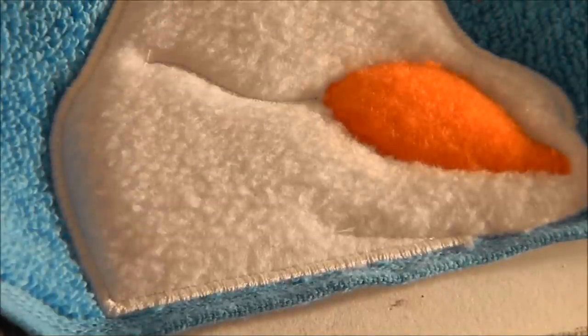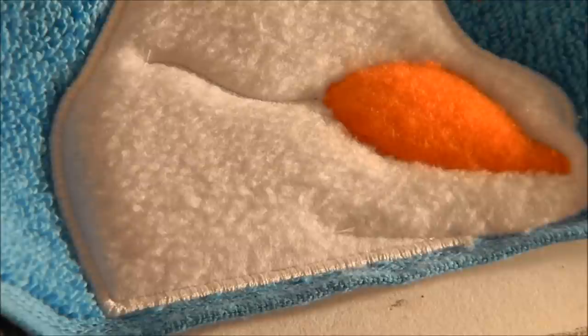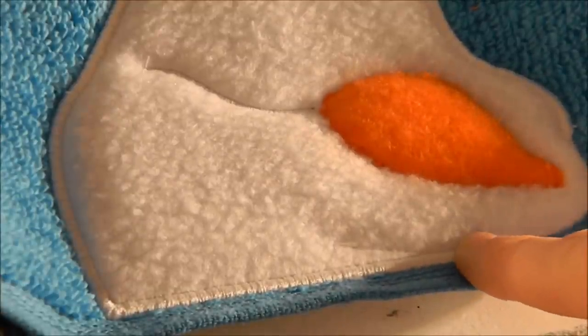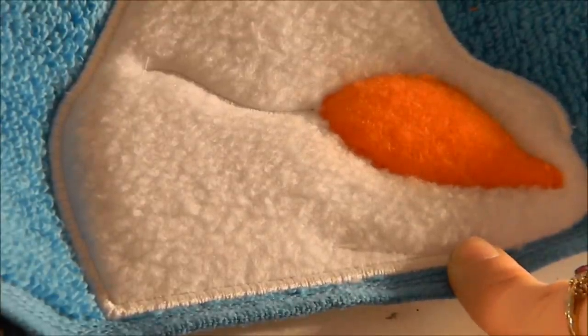As you can see, I've done the satin stitch around the snowman and I have cut my jump stitches. And I've also gone ahead and done the placement stitch so I know where I need to put the teeth.